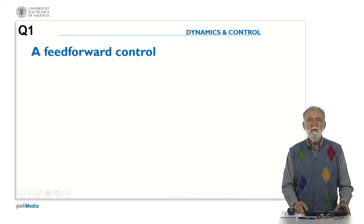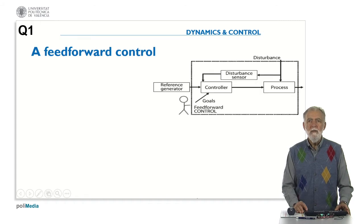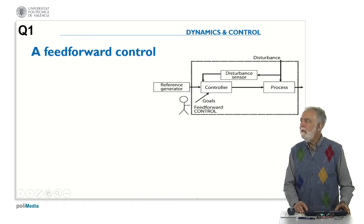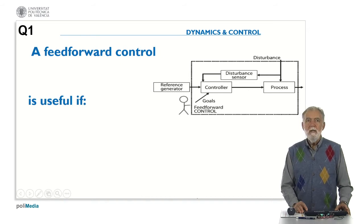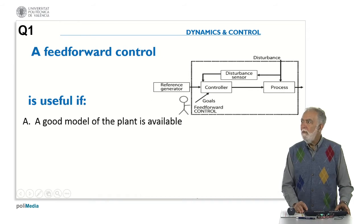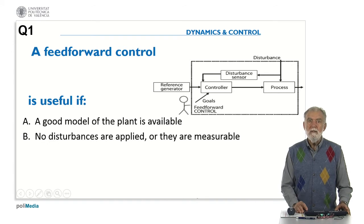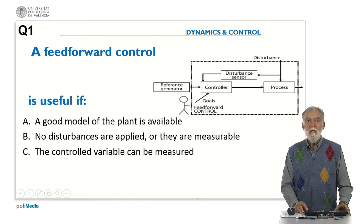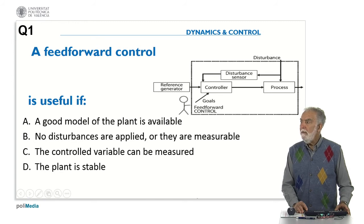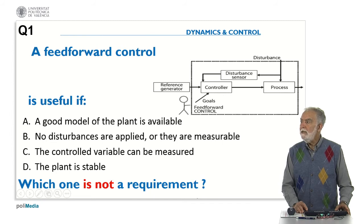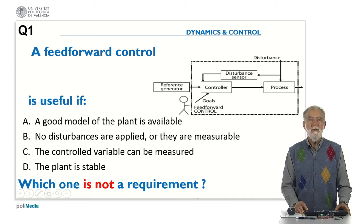Let's start with the first question. A feedforward control — you could remember this figure — is useful in some cases: if a good model of the plant is available, if no disturbances are applied, or if disturbances are measurable, if the control variable can be measured, or if the plant is stable. So which one of these conditions is not a requirement? Please think about that.